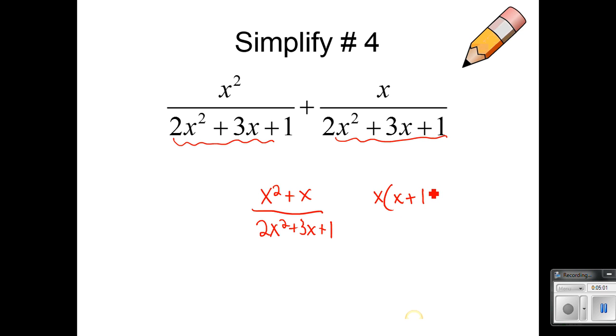What they have in common on top is an x. So I would get x times x plus 1. I would use the AC method here. 2 times 1 is 2. Two factors of 2 that make 3 would be 2 and 1. I would go ahead and put those in my four squares.